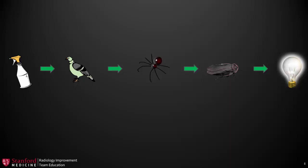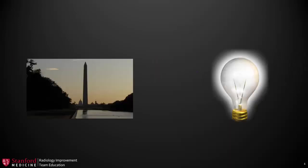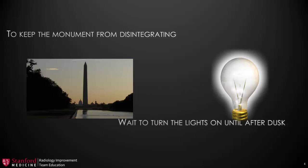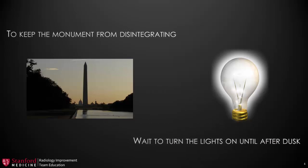Now we could ask, why do we turn the lights on at dusk? Well, the sun goes behind the earth and you can't see anymore. Now, that's a problem that's a little large for us to solve. So I think for this example, we'll stop at the light. So when we look at our problem, to keep the monument from disintegrating, a reasonable solution may be to wait to turn the lights on until after dusk.